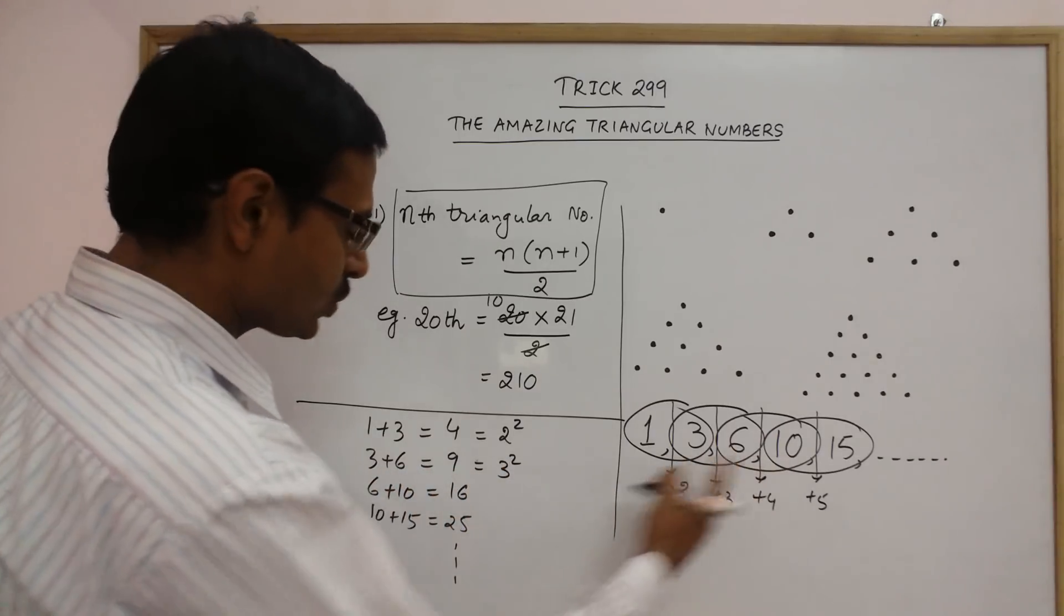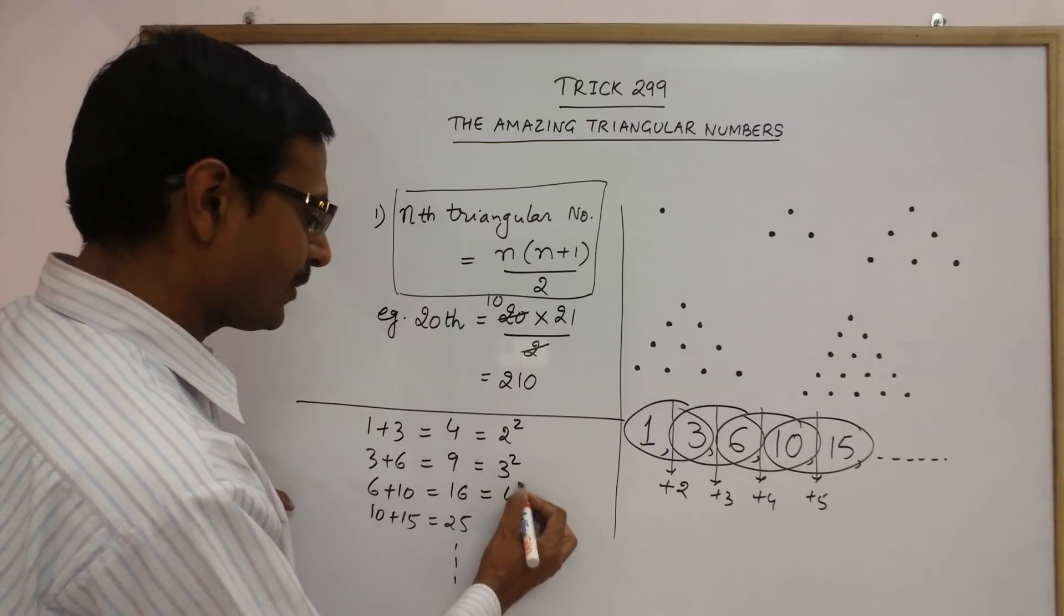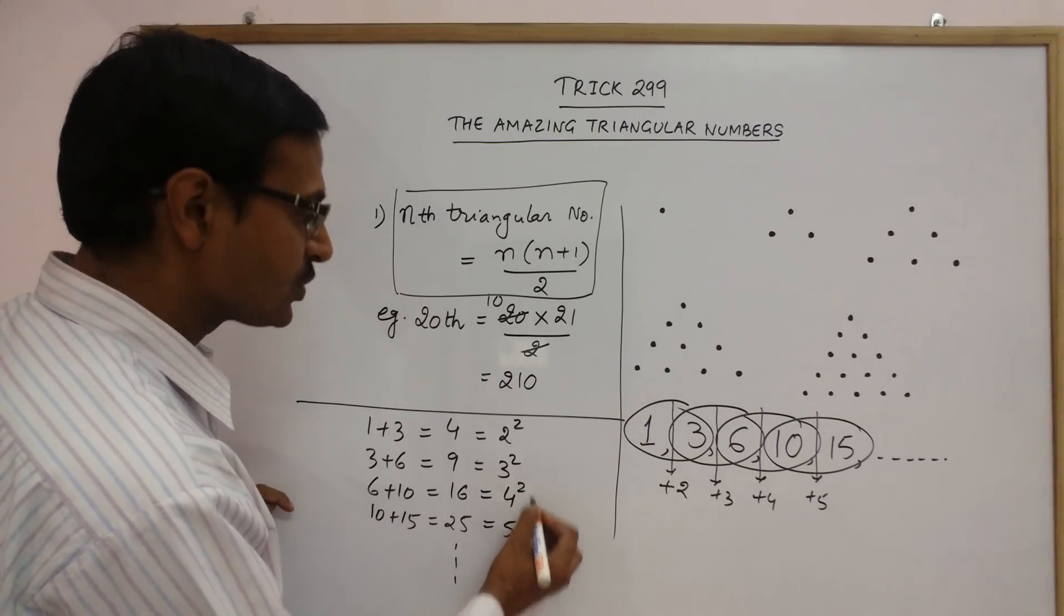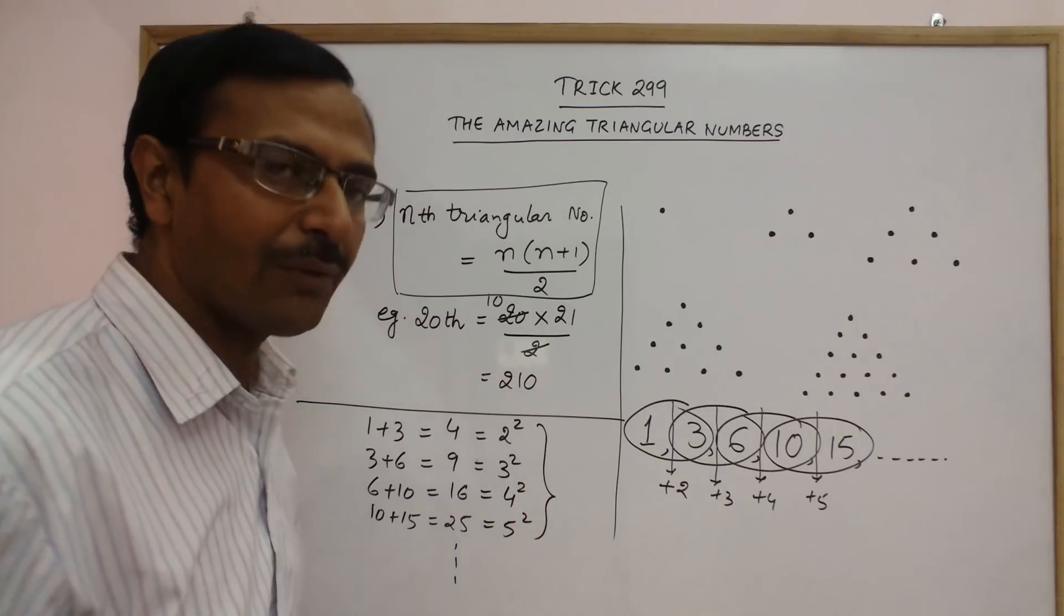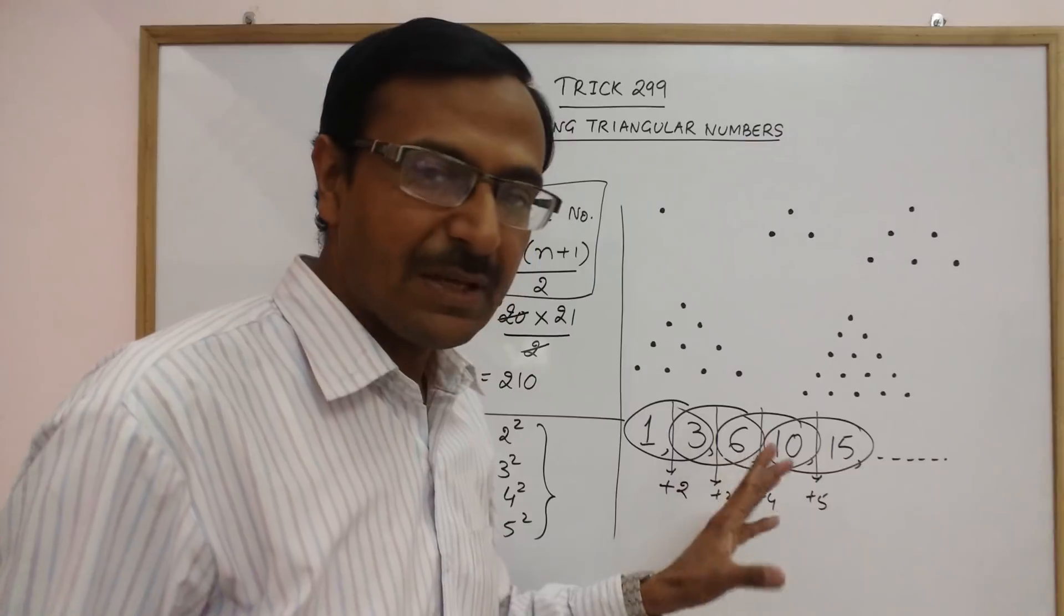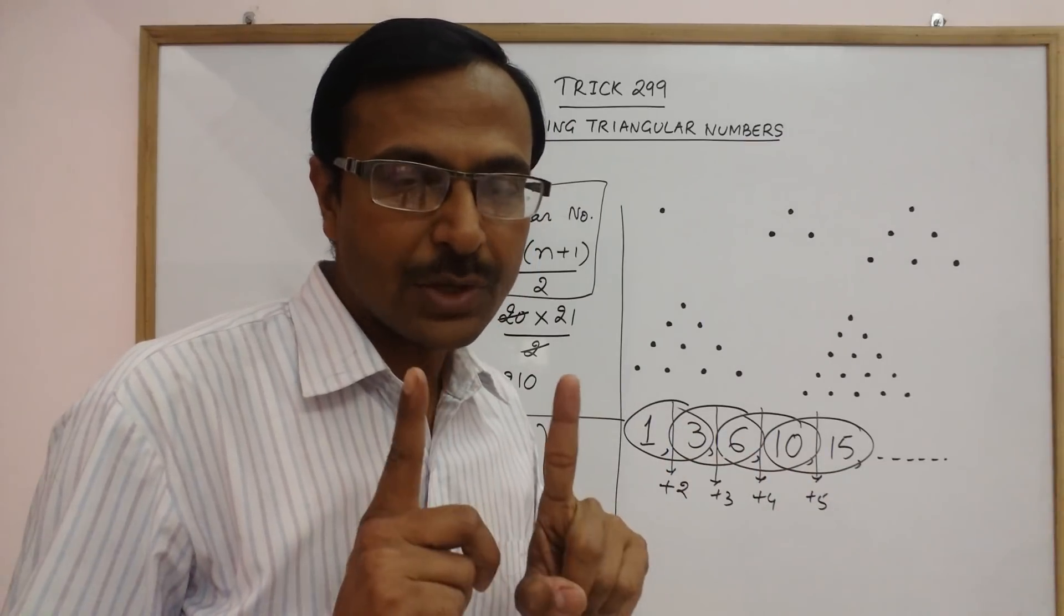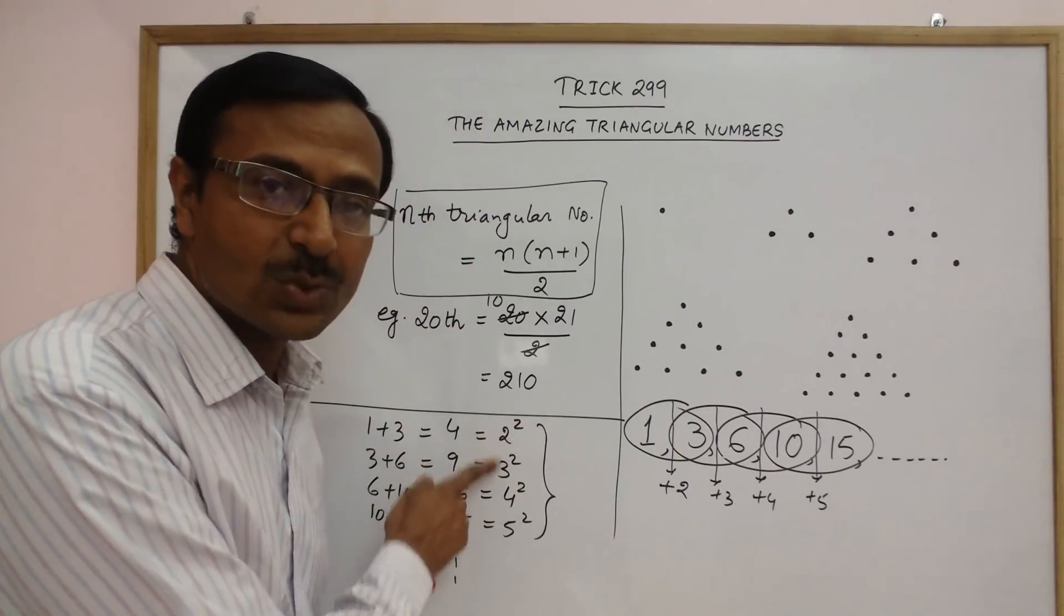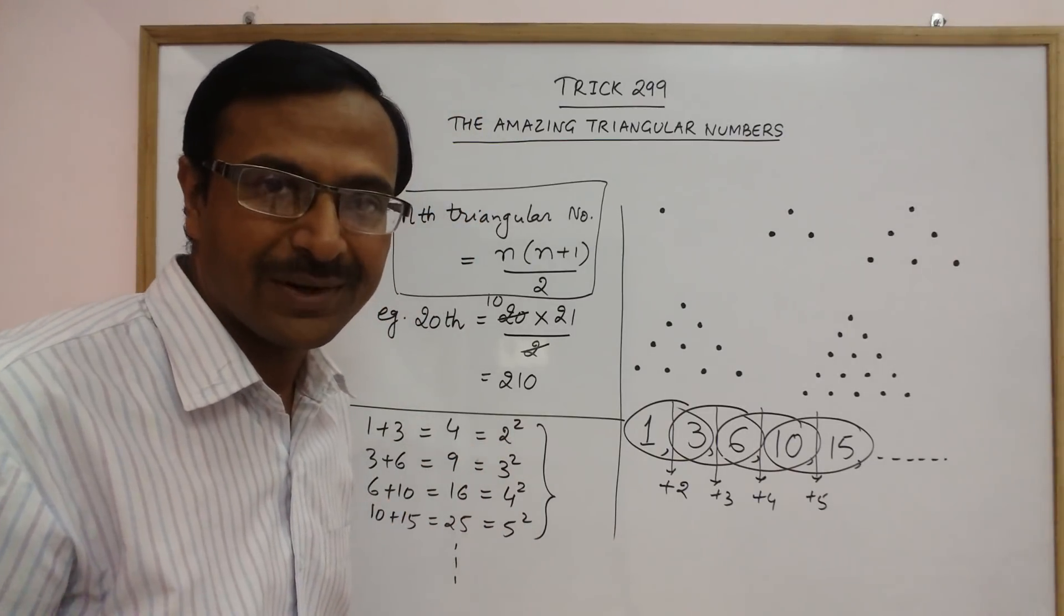If you add the next two, you get 16 which is 4 square. If you add the next two, you get 25 which is 5 square. So, all the sums of triangular numbers which occur consecutively, consecutively means one after the other. If you add the two triangular numbers, then their sum will always be the square of a natural number.